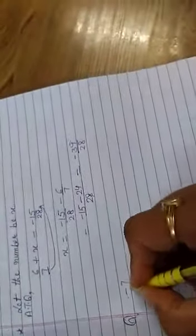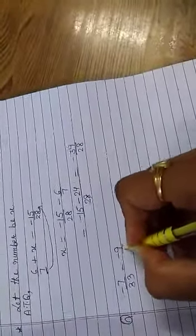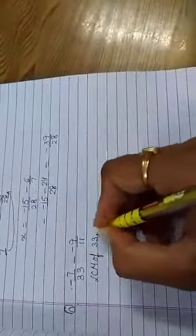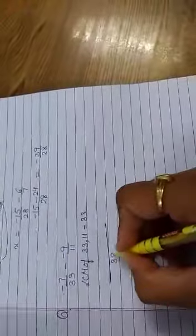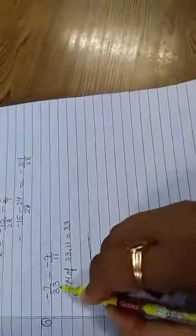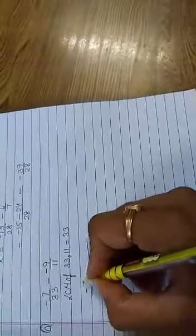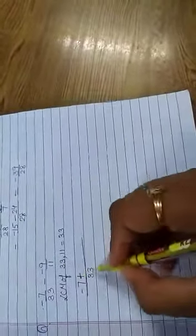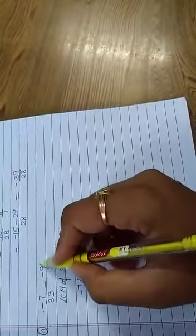Minus 7 upon 33 minus minus 9 upon 11. Take LCM. 33 divided by 33 will be 1, 1 multiply minus 7 will be minus 7. Minus minus plus.